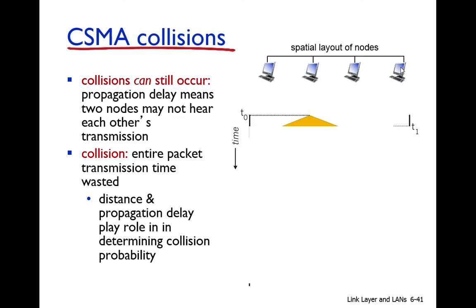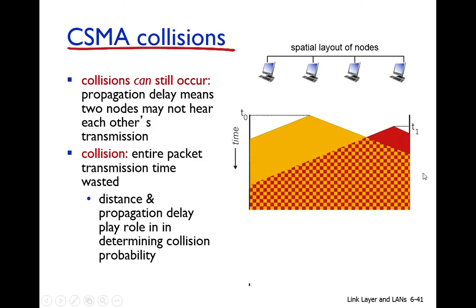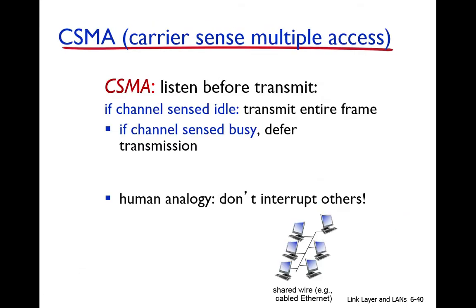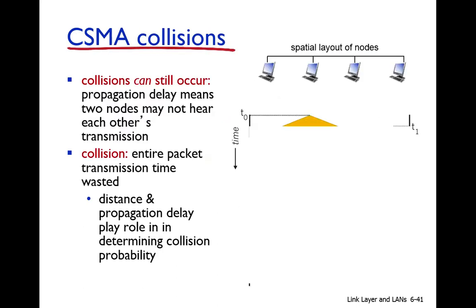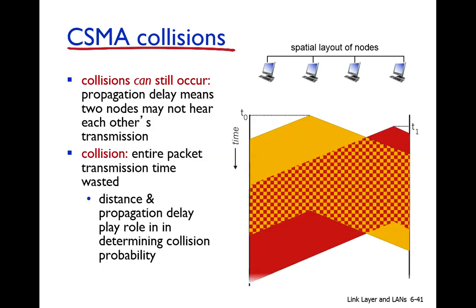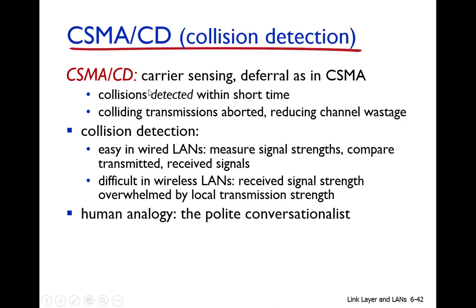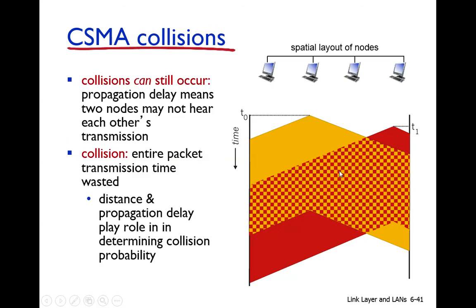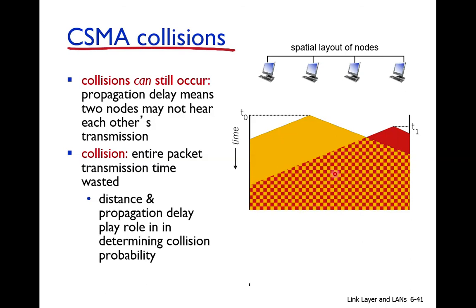In CSMA, there is a lower probability of packet collision compared to pure Aloha and slotted Aloha, because the node first listens to the medium before transmitting. But collisions can still occur. So how do we cope with this situation? How do we address this problem of collision in CSMA?